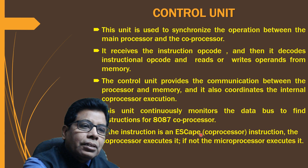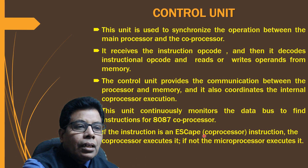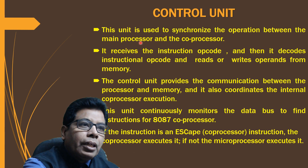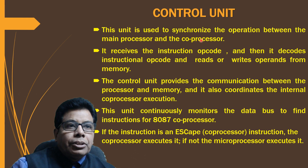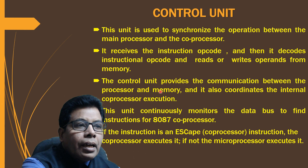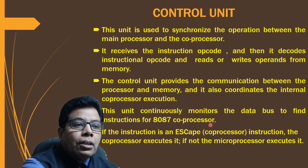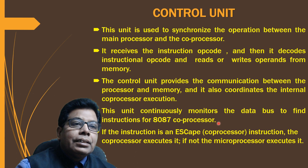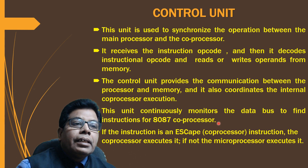Escape instructions are instructions that start with F. If it is not an escape instruction, execution goes to the main processor — that is, the 8086. The synchronization between the main processor (8086) and the co-processor is carried out by the control unit, which monitors the data bus. The instruction set of the 8086 includes additional instructions which are the 8087 instructions, and those instructions are executed by the 8087.